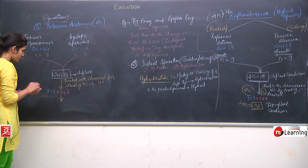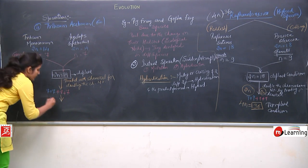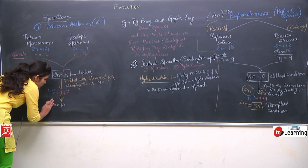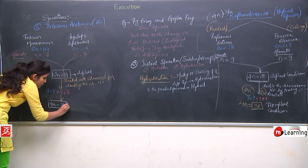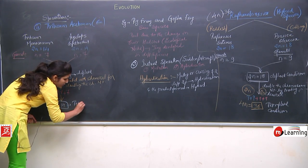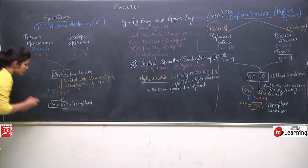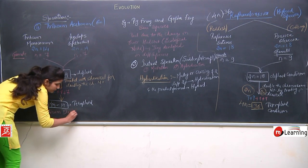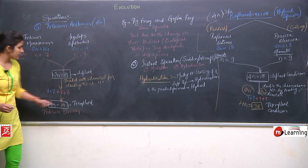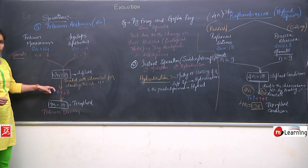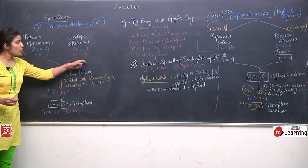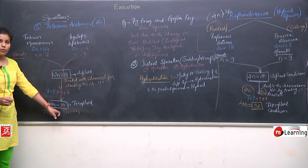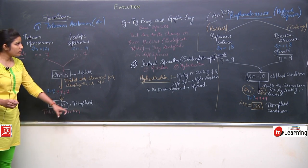The species formed by the combination of these was having 4n equals to 28. This was the tetraploid condition, and the species formed is Triticum durum — formed from the diploid chromosomes of Triticum monococcum and the diploid chromosomes of Aegilops speltoides. This tetraploid species of wheat is called Triticum durum.